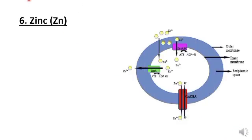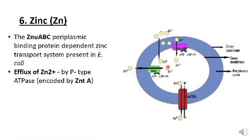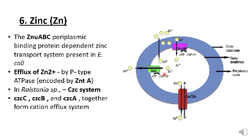Zinc: the ZNU ABC periplasmic binding protein-dependent zinc transport system is present in E. coli. Zinc enters into the cell cytoplasm by this periplasmic binding protein. The zinc efflux out from the cell is by p-type ATPase encoded by the ZNTA gene. In Ralstonia species, the CZC system is present, consisting of three genes: CZCA, CZCB, and CZCC, which together form a cation efflux system.